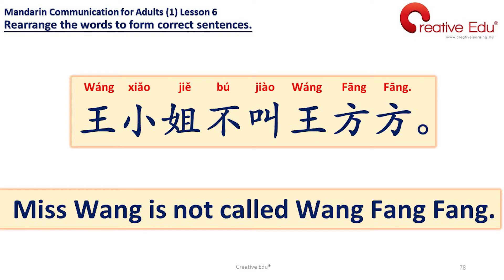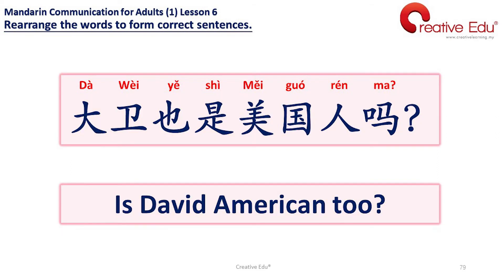Number 5: 王小姐不叫王方方。Miss Wong is not called 王方方. 王小姐不叫王方方。Number 6: 大卫也是美国人吗？Is David American too? 大卫也是美国人吗？